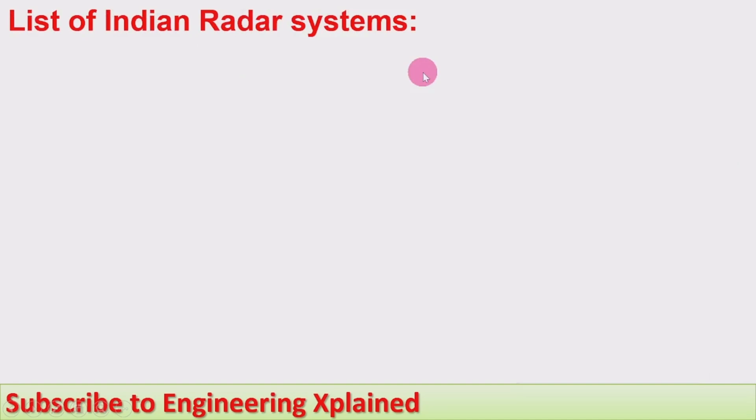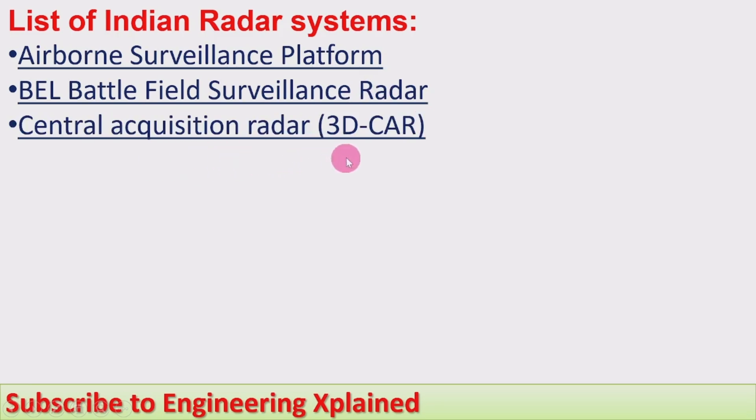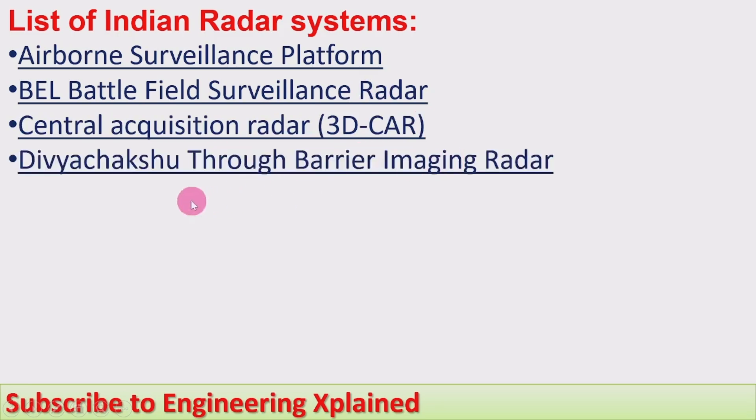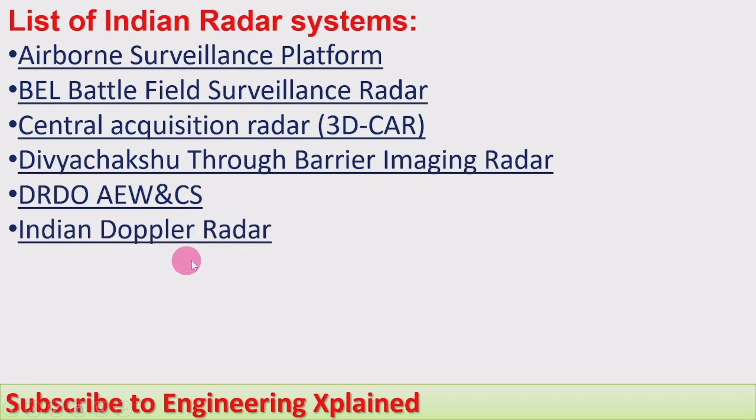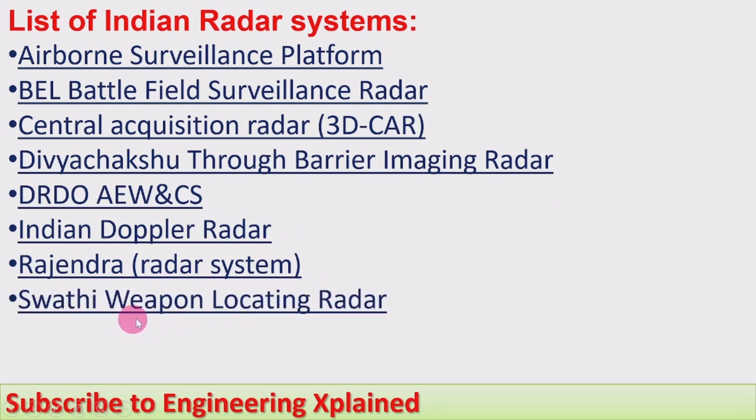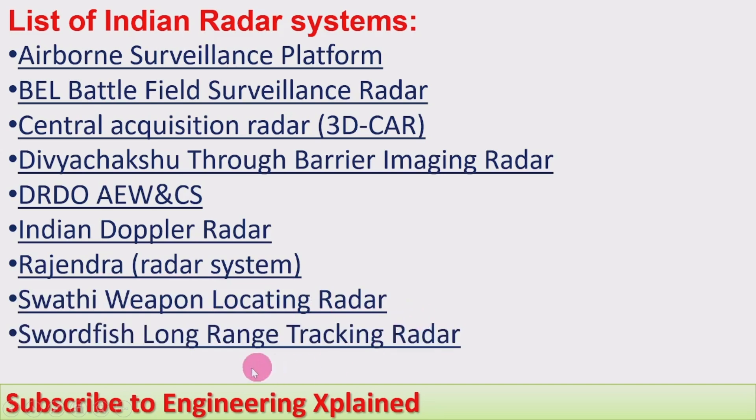List of Indian radar systems: Airborne Surveillance Platform, BEL Battlefield Surveillance Radar, Central Acquisition Radar 3D-CAR, Divyachakshu Through Barrier Imaging Radar, DRDO AEW&CS, Indian Doppler Radar, Rajendra Radar System, Swathi Weapon Locating Radar, Swordfish Long Range Tracking Radar, Uttam AESA Radar.